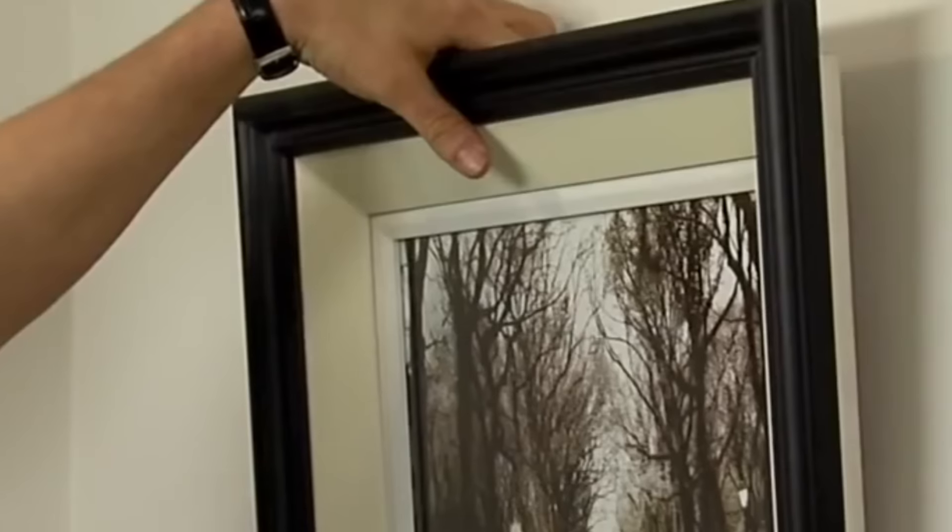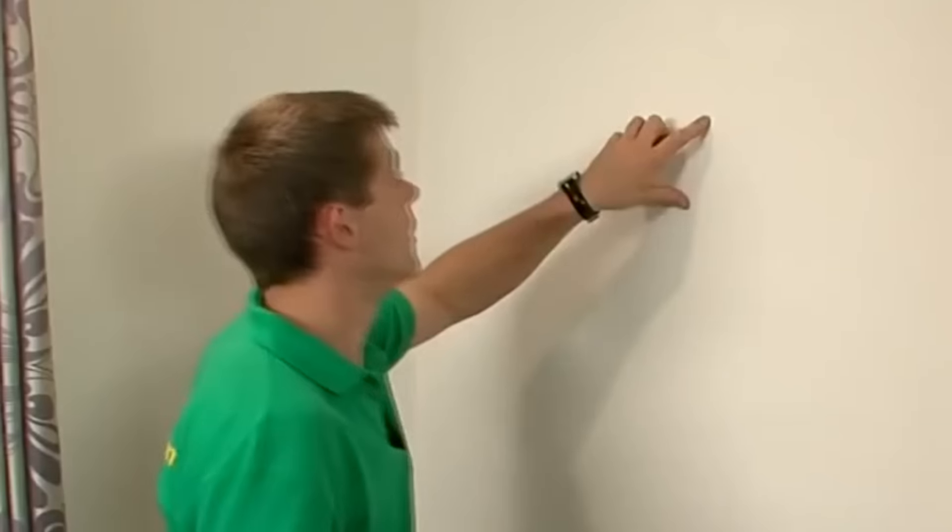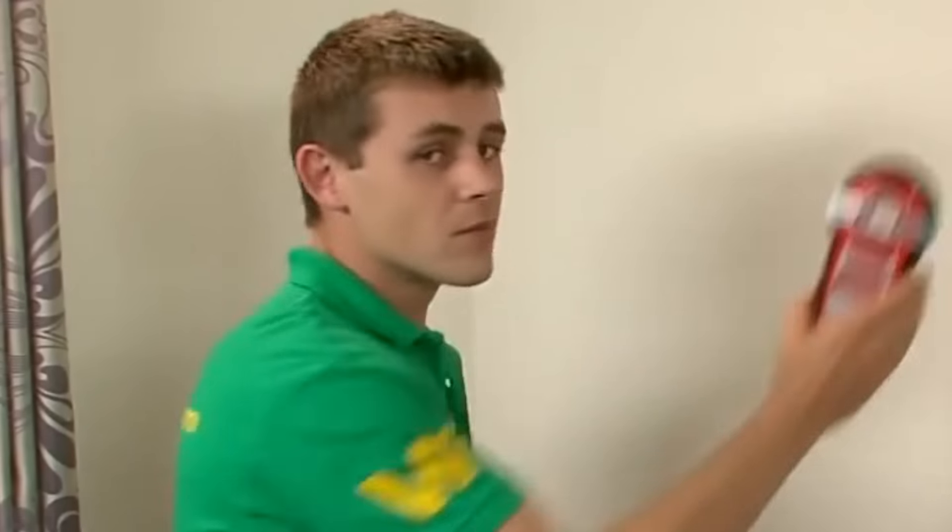We mark a spot at the height we want it, in the center. And now we know the position of the hole we are going to drill. Once you're satisfied there's no pipes or cables behind the walls, we're ready to drill.